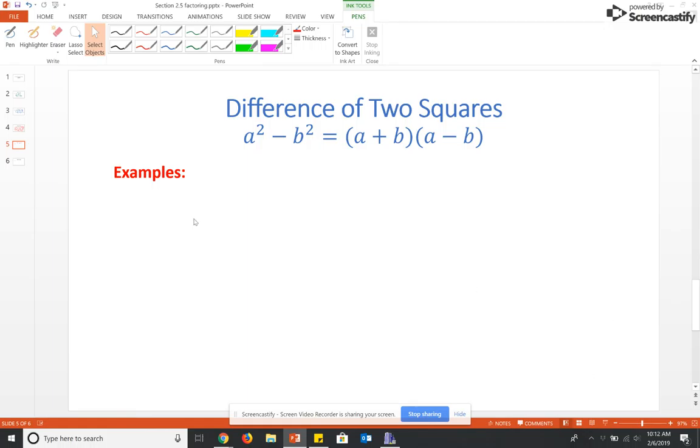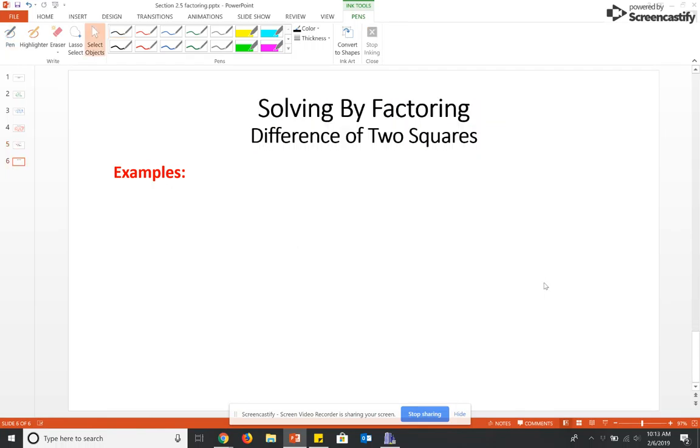So for example, if I had 64X squared minus 49, according to this, this is going to factor – square root of 64 is 8, so you're going to have 8X plus square root of 49 is 7. And once you get the first set of parentheses, you just change the sign between the two terms for the second set. So let's look at an equation using this method.